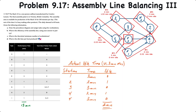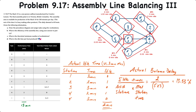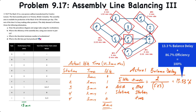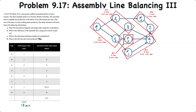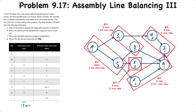To calculate the actual idle time and actual balance delay, we determine idle time relative to the maximum station time. Stations 1, 3, and 5 have zero idle time, while stations 2 and 4 each have 1 minute of idle time, for a total of 2 minutes. The actual balance delay is 2 divided by five workstations times 3, which is 2 over 15, or 13.33%. Adding that to the actual efficiency of 86.7% gives 100%. And that's how you calculate cycle time, minimum number of workstations, balance a line, and calculate both theoretical and actual idle time and balance delay.